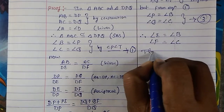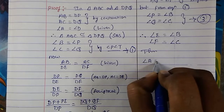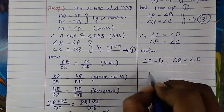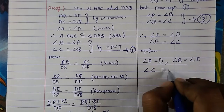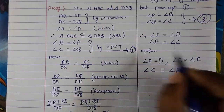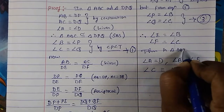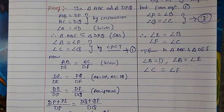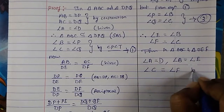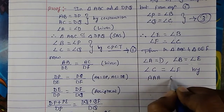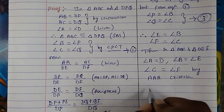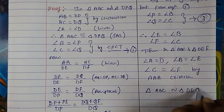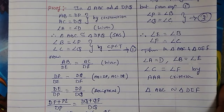Thus, angle A equals angle D, angle B equals angle E, and angle C equals angle F. Since all three angles are equal, triangle ABC is similar to triangle DEF. I hope it is clear to you. Thank you and God bless.